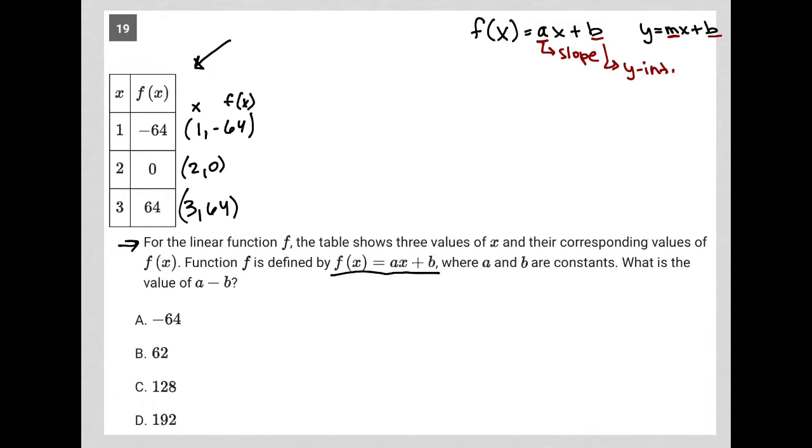All right, so where a and b are constants, what is the value of a minus b? So what are we really finding? We're finding this slope minus the y-intercept. That's what we're looking for.